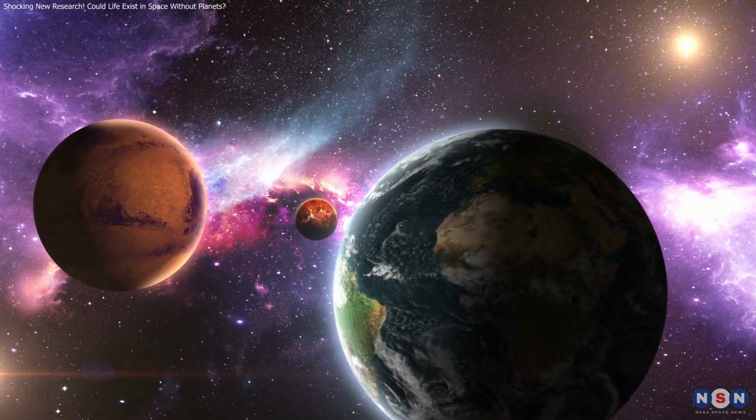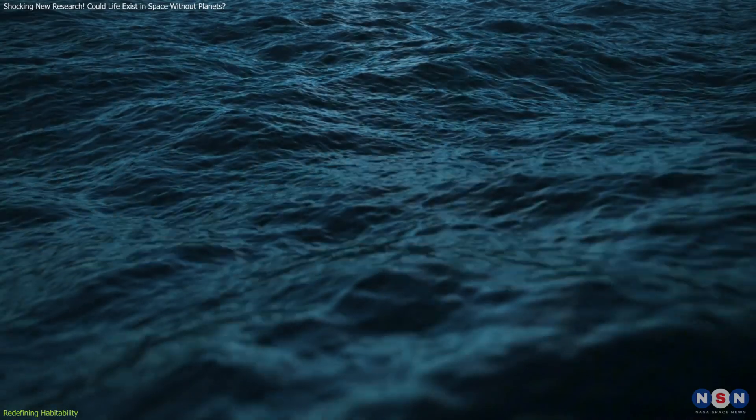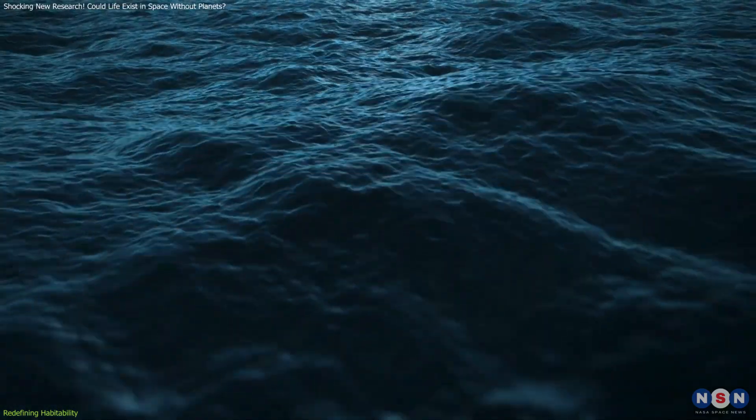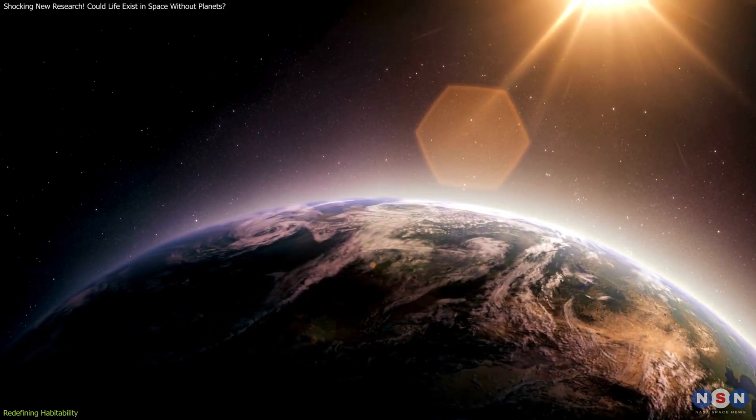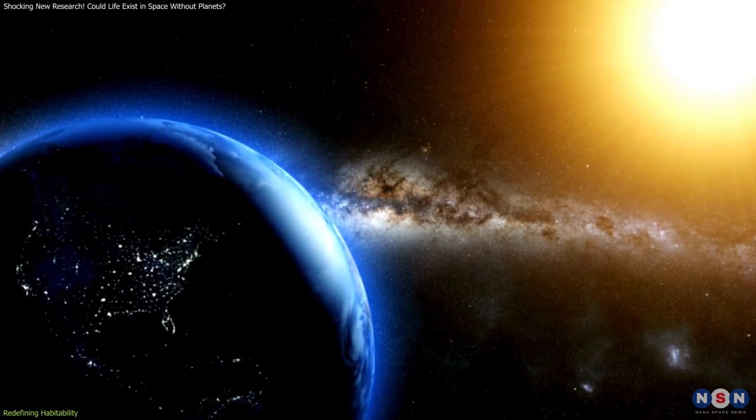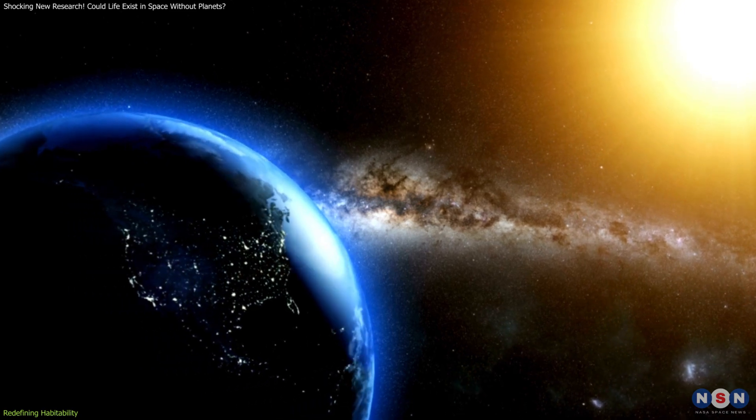Traditionally, scientists define habitability based on the presence of liquid water, moderate temperatures, atmospheric pressure, and protection from harmful radiation—all characteristics of a stable planetary environment.